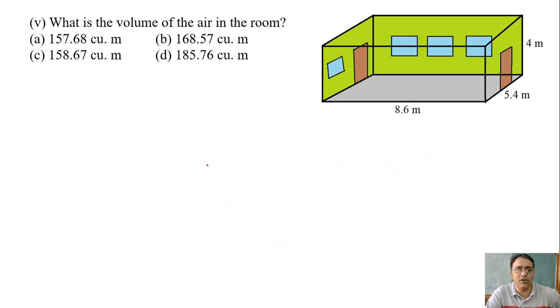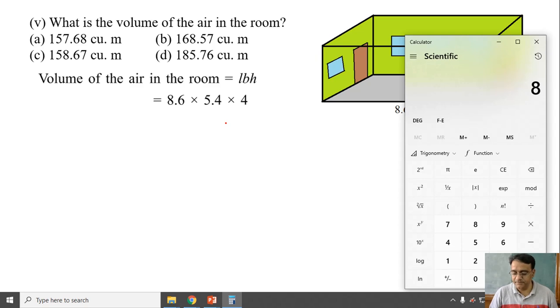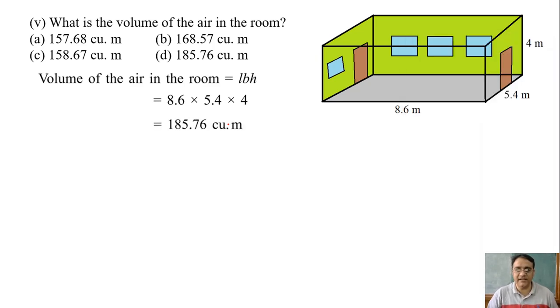So now the last question: what is the volume of the air in the room? So what is the volume of cuboid? L into b into h. That means 8.6 into 5.4 into 4. So we are getting 185.76 cubic meter. So which option is the correct one here? D. Okay.